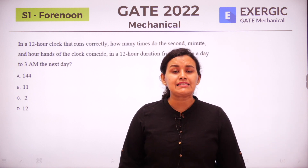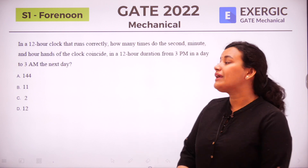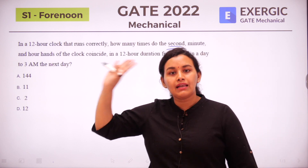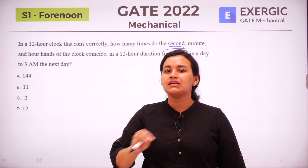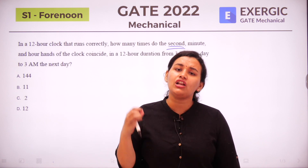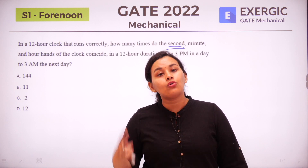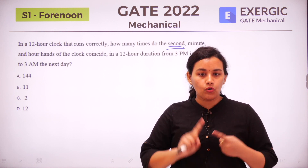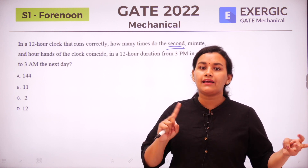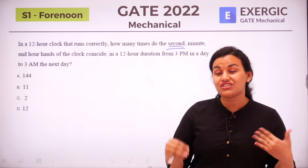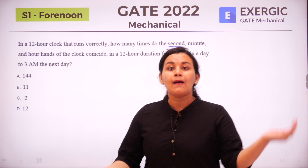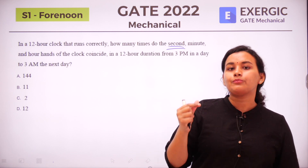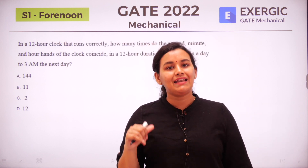So why is this question so interesting? It's interesting because the second hand is in the picture. Generally in the last few years in major aptitude tests, the second hand is not asked. We generally look at only the minute hand and the hour hand — when they overlap, when they are 90 degrees apart, 180 degrees apart, and so on. But by including the second hand, IIT Kharagpur has taken the question to a next level.